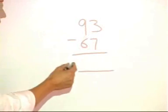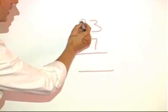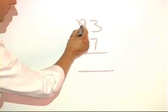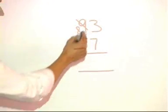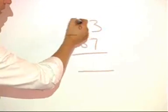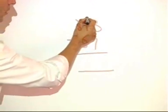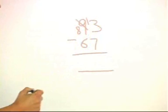If I go into the tens column, I can take 10 away from 90, so taking 10 away from 90 leaves with 80 or eight tens, and I can place the 10, effectively transfer it into the units column there to make that 13.